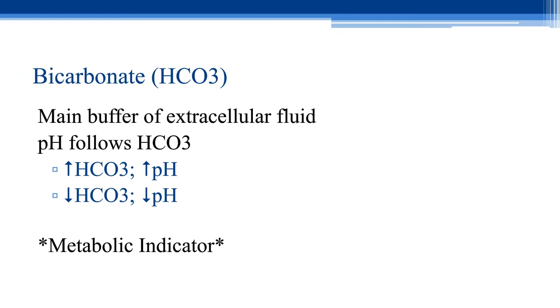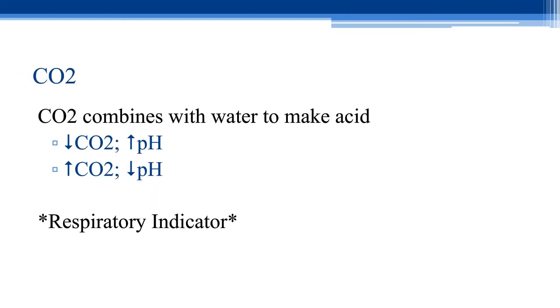In our venous blood gas measurements we have pH, bicarbonate, and then CO2. Carbon dioxide - the important thing to remember is that it is an acid. If we think about bicarb being a base, carbon dioxide when combined with water is going to make an acid in the body. Because carbon dioxide is an acid, it has an inverse relationship to pH just like hydrogen does. If we don't have enough CO2, we're going to have a more basic or increased pH. If we have a lot of CO2, we're going to have a decreased or acidic pH. CO2 is our respiratory indicator. So bicarb is metabolic, CO2 is respiratory.